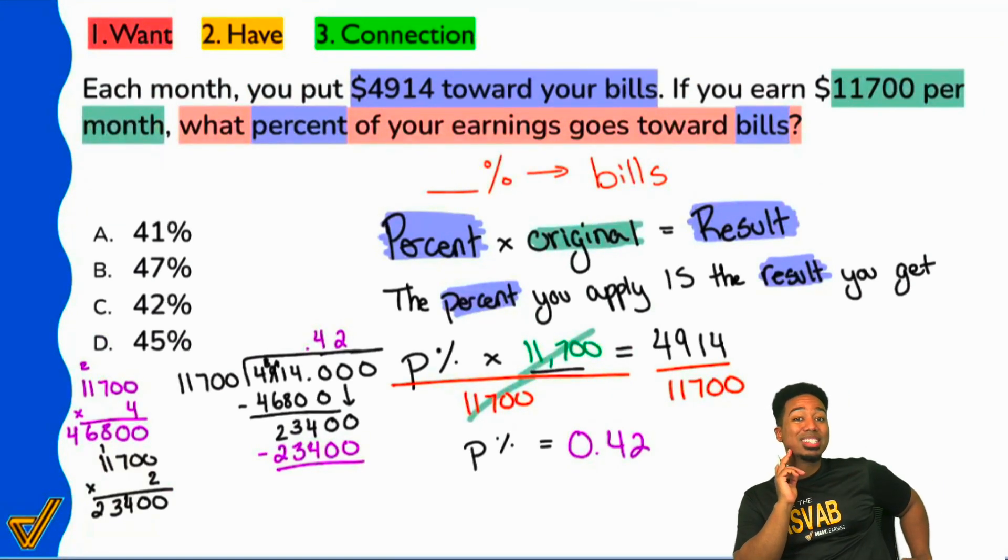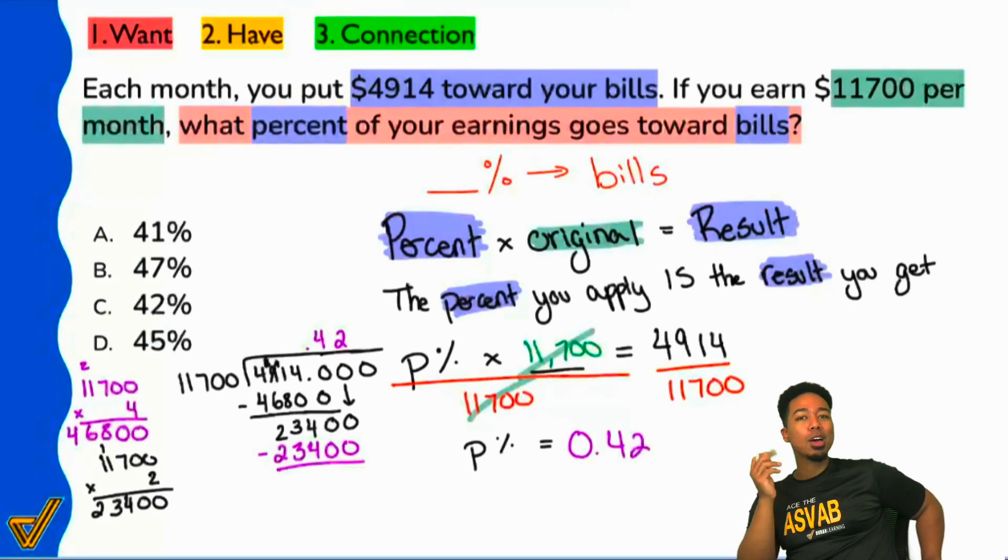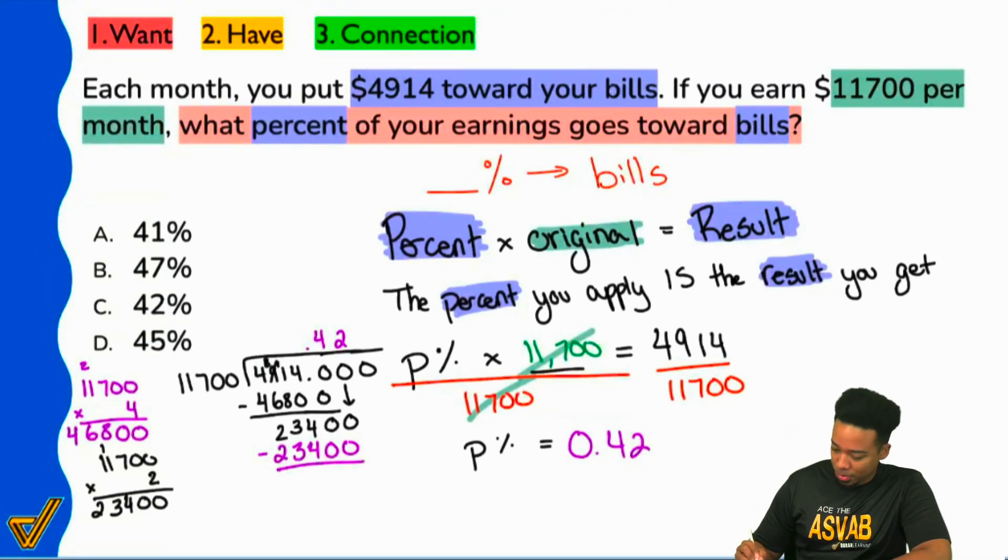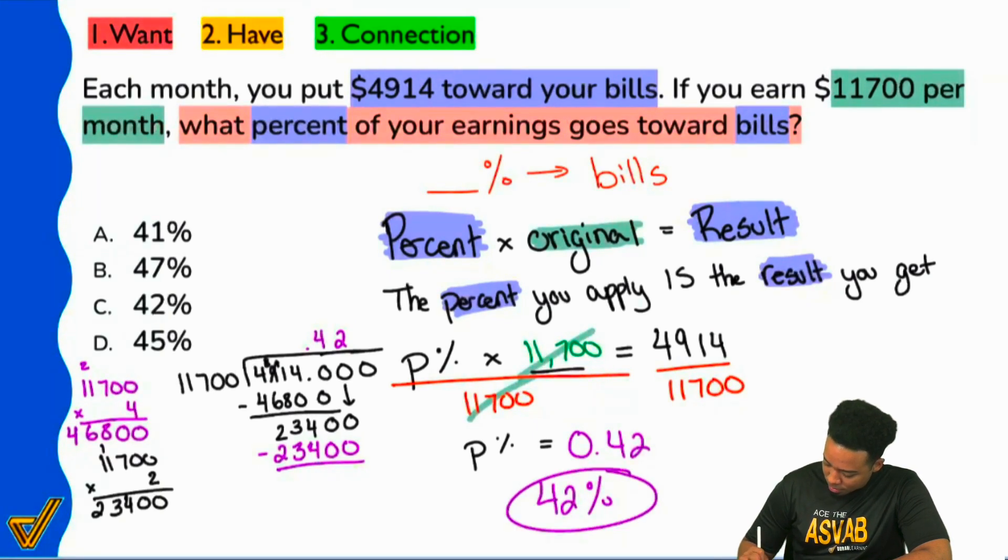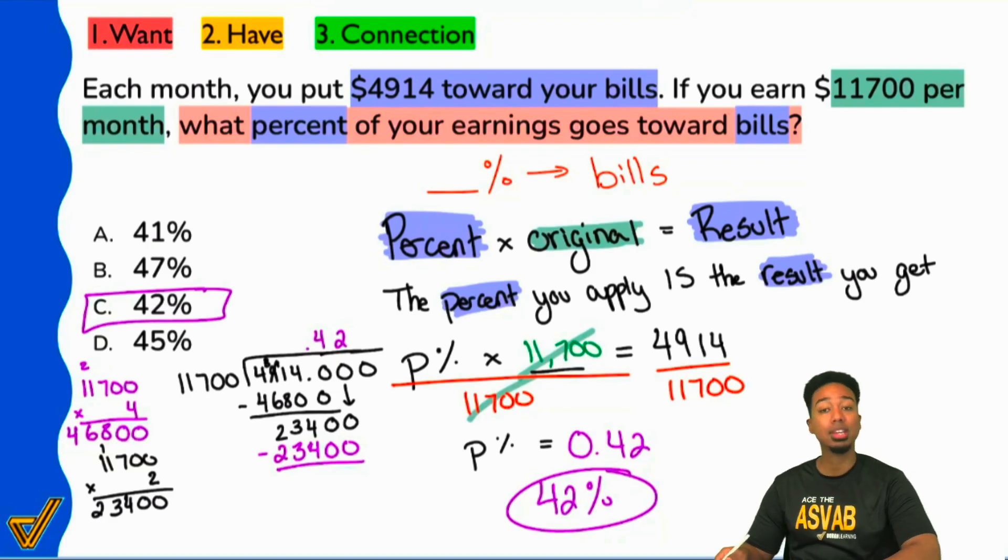Everyone, this answer is in decimal form. What do we do to work backwards to turn a decimal back to a percent? Yep, we multiply by 100. So essentially, that would be 42 percent, and that's why C is the correct answer.